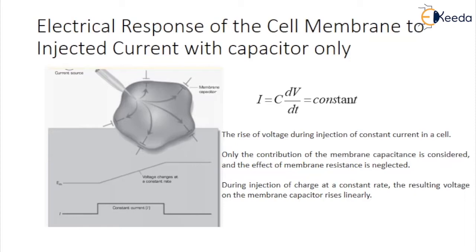If the constant current i is injected into the cell, then the charge q is added to the membrane capacitor at a constant rate i = dq/dt. Because q = C × v for a capacitor, i = C × dv/dt, showing the rise of voltage during injection of constant current in a cell. Only the contribution of the membrane capacitance is considered and the effect of membrane resistance is neglected. During the injection of charge at a constant rate, the resulting voltage of the membrane capacitor rises linearly.